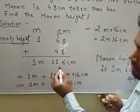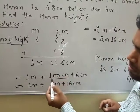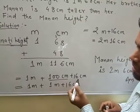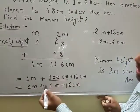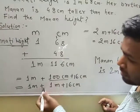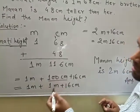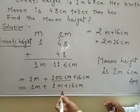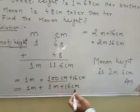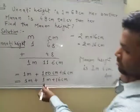So we can write this 116 centimeter like this, 100 centimeter plus 16 centimeter, and 1 meter plus 100 centimeter, we can write them 1 meter, and again 16 centimeter. Then 1 meter plus 1 meter,